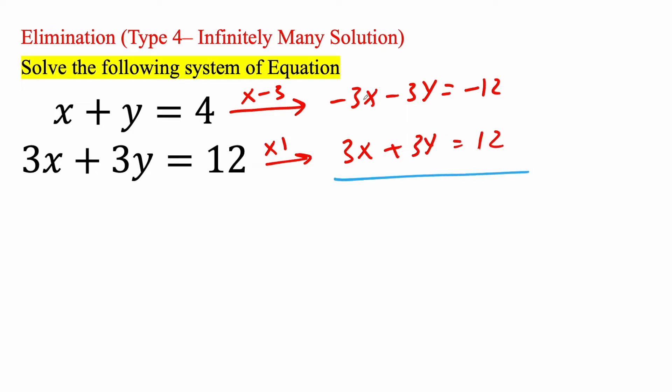At this point, we'll combine negative 3x plus 3x is 0x, or 0, gets eliminated. Negative 3y plus 3y is 0y, so it gets eliminated, and is equal to negative 12 plus 12 is 0.